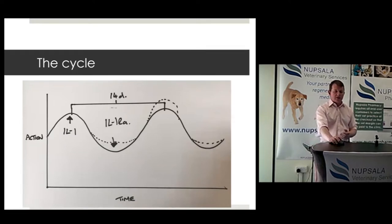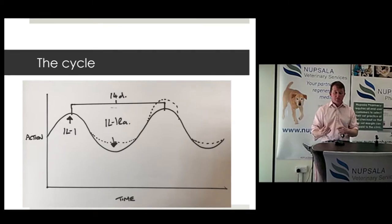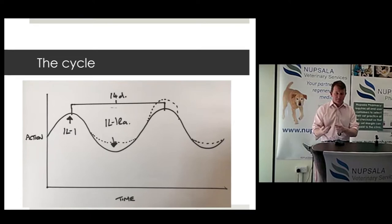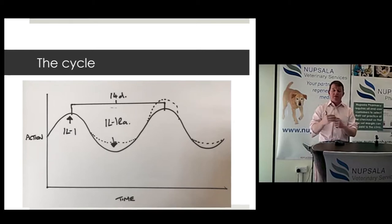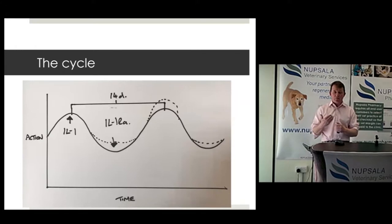Essentially this cytokine is a little bit like a text message — it carries a message but isn't actually destructive itself; it carries a destructive message. Within the synovial environment, IL-1 works by binding with cell receptors, for example on the chondrocyte. If it binds with a receptor on the chondrocyte, it passes a destructive message through to that cell.